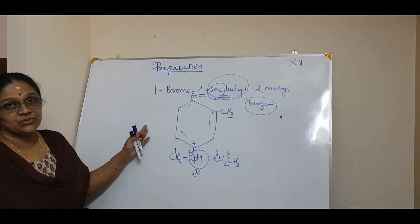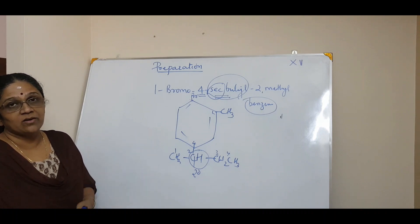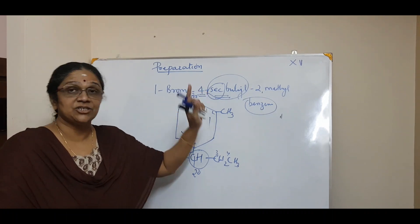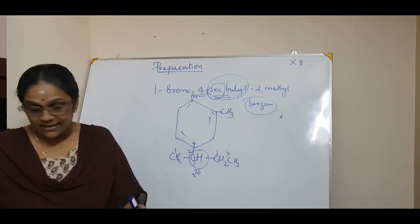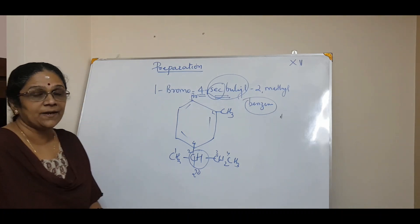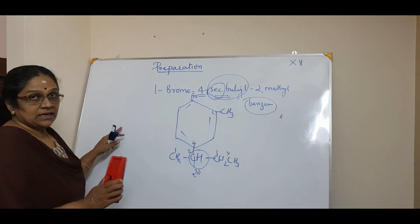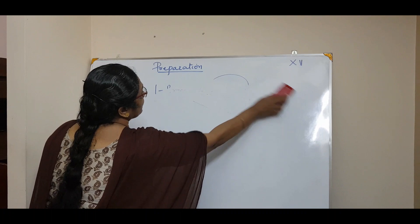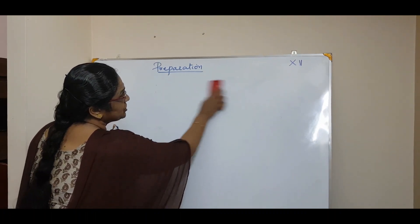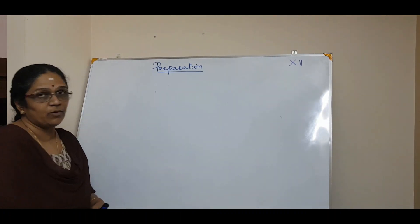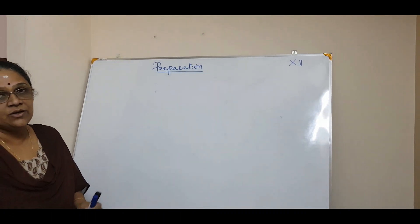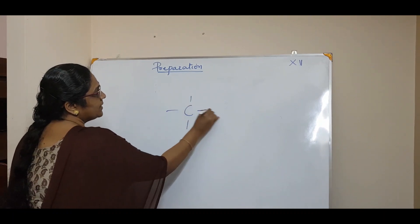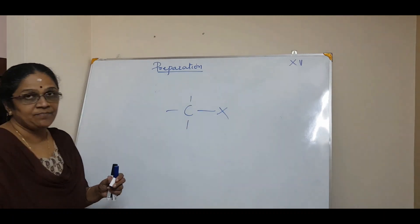Hope you understood how to name the compound. Be very careful when writing tert-butyl and secondary butyl. Now we will move on to the next topic: the nature of the carbon-halogen bond. Haloalkanes contain a carbon and a halogen.